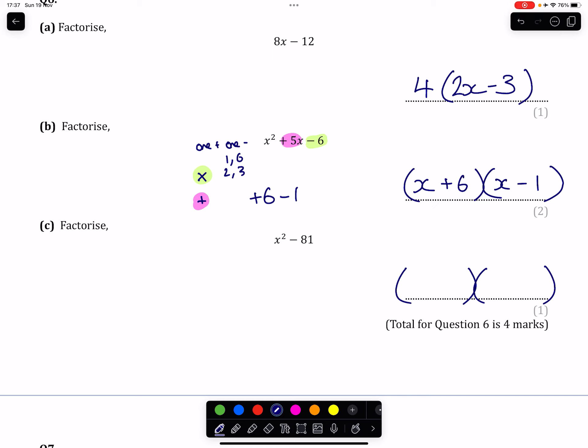Technically, you can set up something similar to the previous one, where you're looking at what times what makes 81, except here when it comes to the adding part, you are going to get 0 because there is no middle term. There's 0x in here.